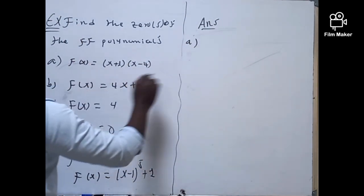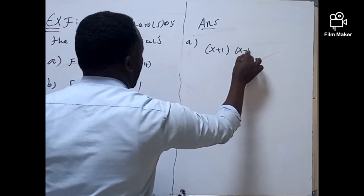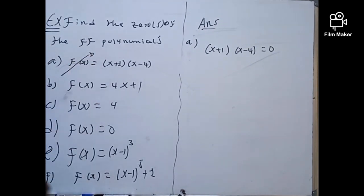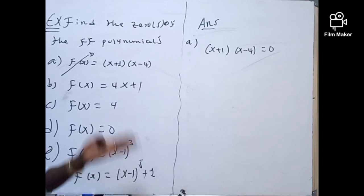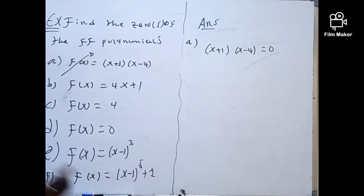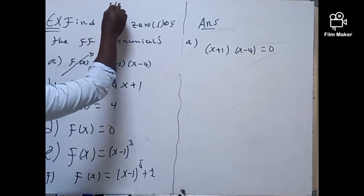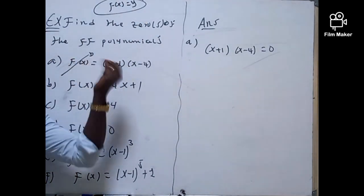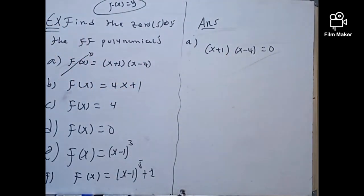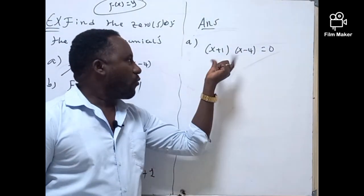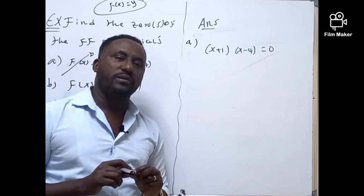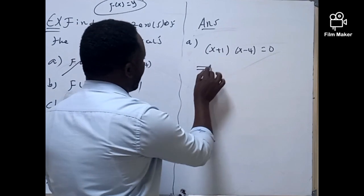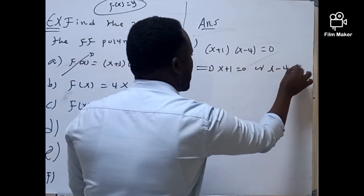So, the first problem: we have the function f(x) = (x + 1)(x - 4), and we have to make this equal to zero. The zero of the polynomial means we need to find the x-intercept of the polynomial. When y is zero, we get the x-intercepts. When we say the product of two numbers is zero, either of them or both have to be zero. So this implies that x + 1 = 0 or x - 4 = 0.